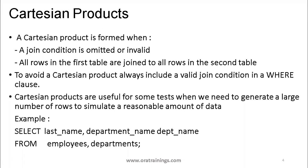Before getting into cartesian product, we need to understand why we use joins. In most relational database management systems — whether Oracle, SAP, Microsoft, or IBM — data may not be stored in a single table. It gets segregated across multiple tables for various reasons. We always need to refer to the data model of your database whenever you want to write queries.